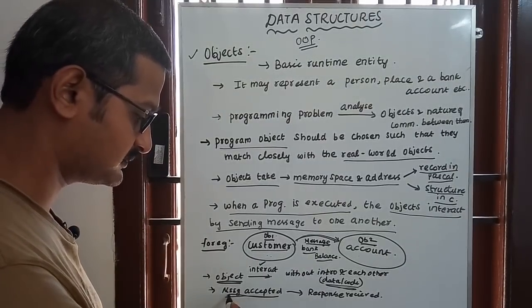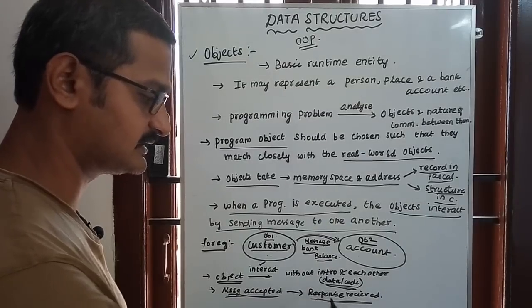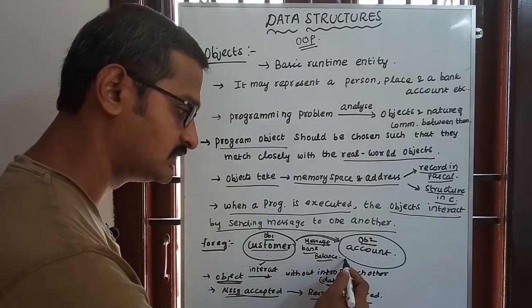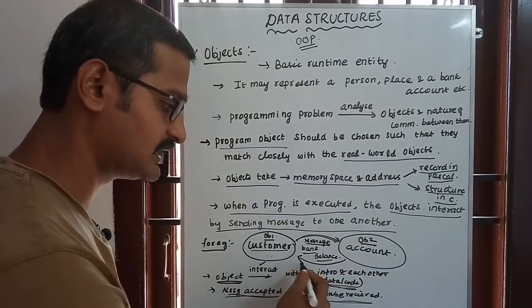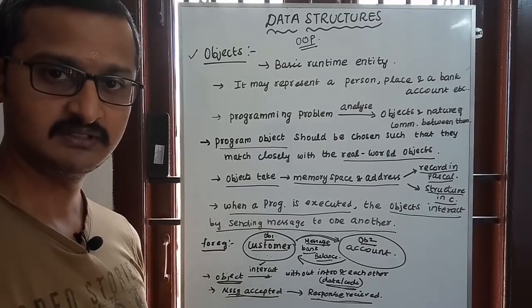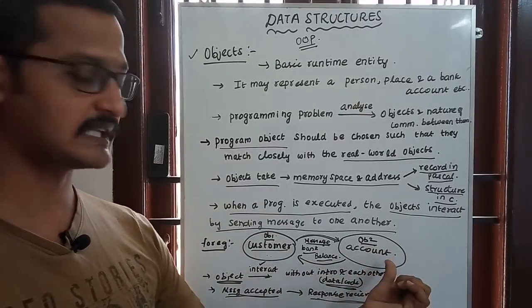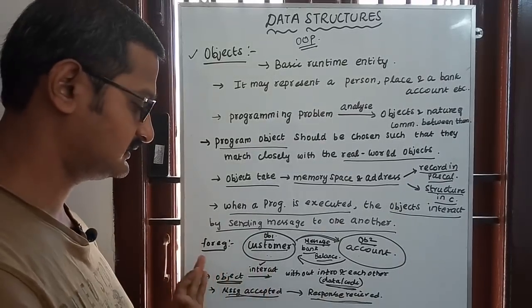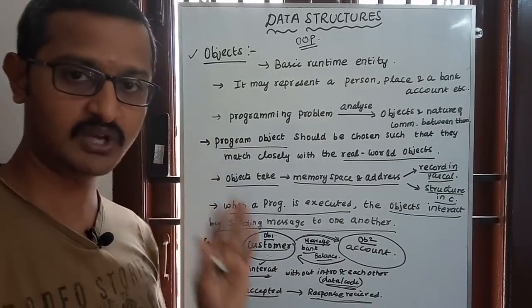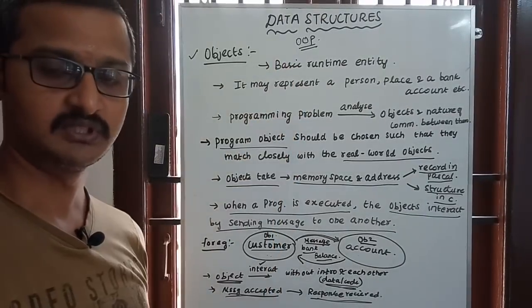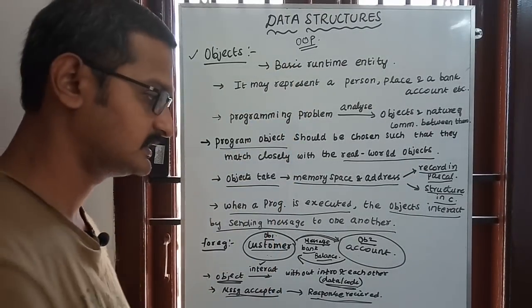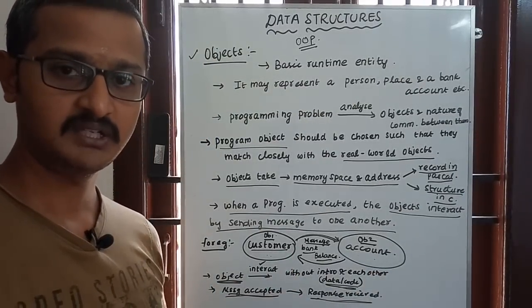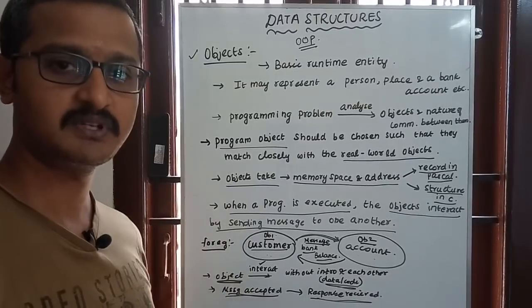The message is accepted and a response is received. When requesting the bank balance, a message is sent and a response is received from the other object. This is what happens in an object-oriented program - messages are sent and responses are returned.